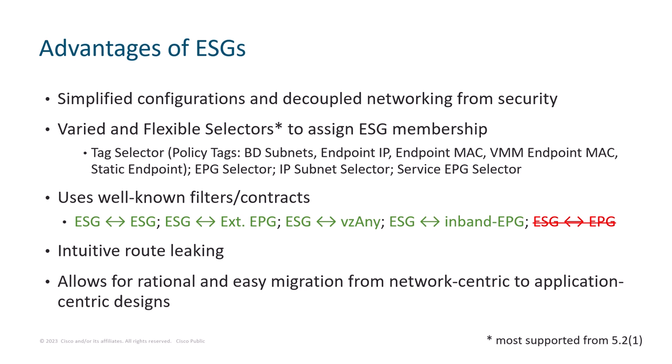For communication between different ESGs, we use the very same contract constructs we have used in ACI since inception. Therefore, we have several supported relationships like ESG to ESG, ESG to external EPG (so L3out EPG), ESG to VZN, and also ESG to in-band EPG. However, remember that configuring a contract between ESG and any other EPG not mentioned is not supported.